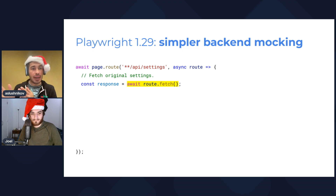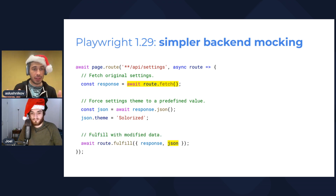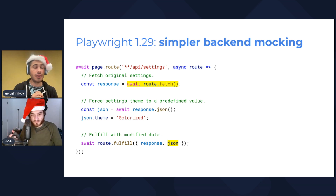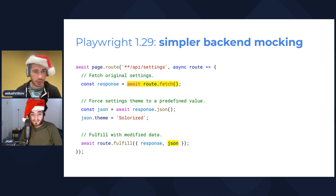This method will go to the server and return a response for the original request that was intercepted. So now I can go and fetch the JSON body, modify the JSON body, and fulfill this route with the original response — with all the headers and with the modified JSON body. So route.fetch goes to the network and gets the settings HTTP response, but it's not going to send it back to the webpage — it gives it to you in the Playwright script.